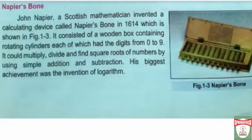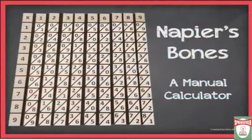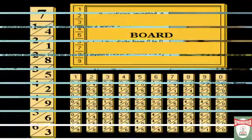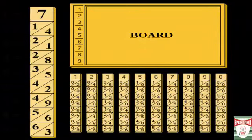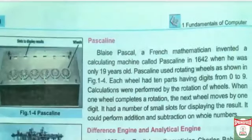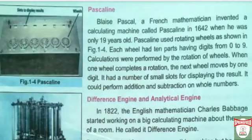Now we talk about Napier's Bones. John Napier, a Scottish mathematician, invented a calculating device called Napier's Bones in 1614, as shown in the figure. It consisted of a wooden box containing rotating cylinders, each of which had the digits from 0 to 9. It could multiply, divide, and find the square roots of numbers by using simple addition and subtraction techniques.